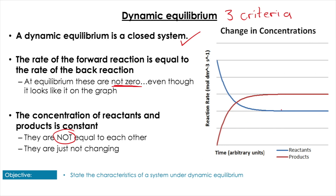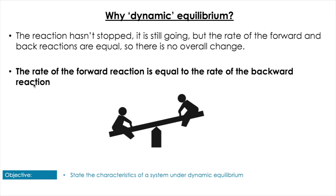The third criterion is that the products and reactants concentrations remain constant. That's not to say they're the same as each other — they usually will not be — it just means they're not changing because the system has reached the point of equilibrium.